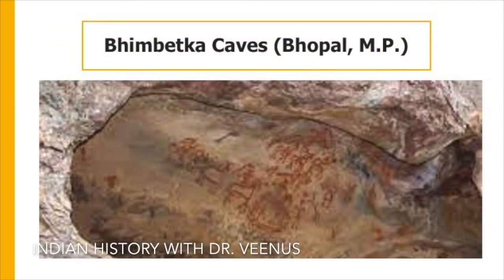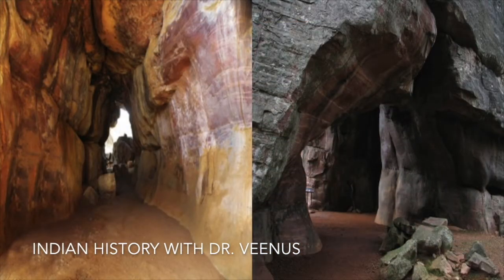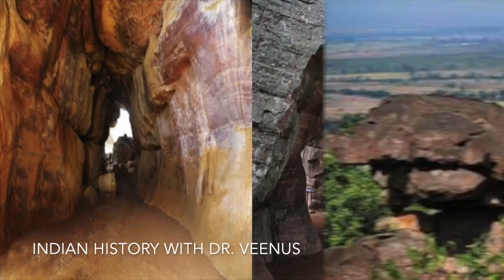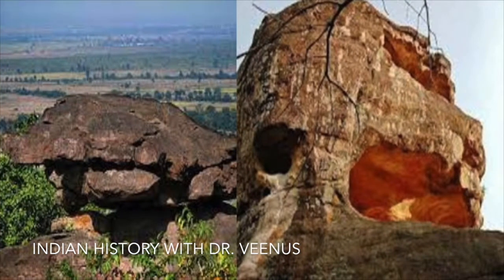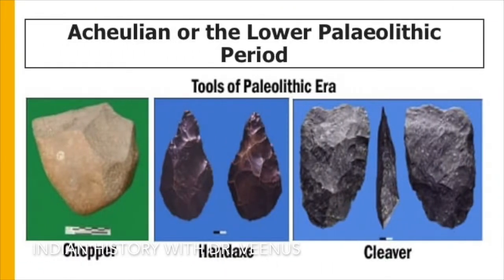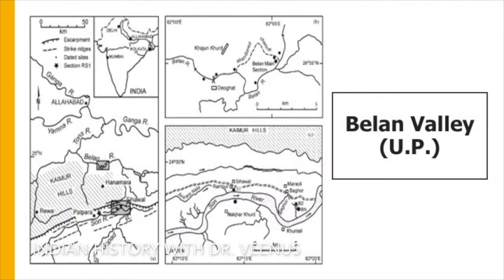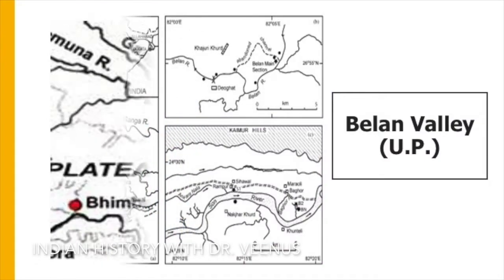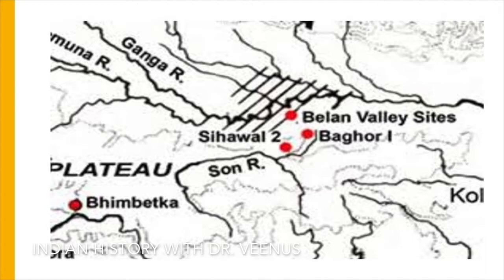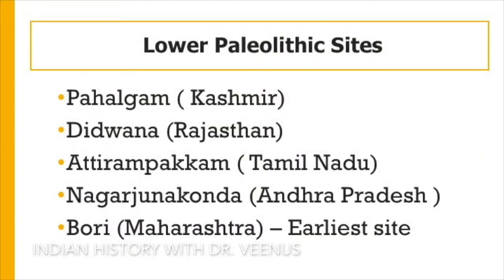Bhimbetka is situated 45 kilometers south of Bhopal in Raisen district of Madhya Pradesh. It is famous for its caves and rock shelters formed by the natural process of weathering of the sandstone of the Vindhya hills. The Acheulean or Lower Paleolithic period deposit is the thickest and includes tools like scrapers, cleavers and hand axes. The Belan valley of Uttar Pradesh in the region stretching from Allahabad to Varanasi revealed a complete sequence from the Lower Paleolithic to the Neolithic and even later times. Other sites like Pahalgam, Didwana, Nagarjunakonda and Bori in Maharashtra also revealed the Lower Paleolithic cultures.